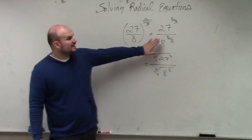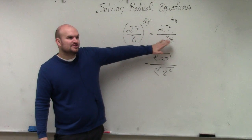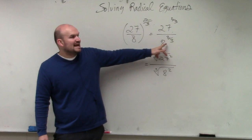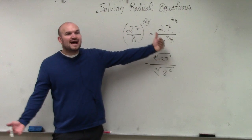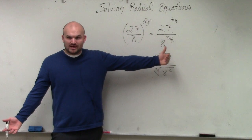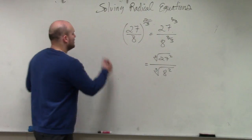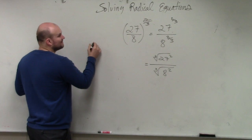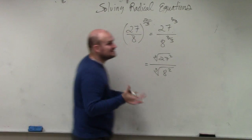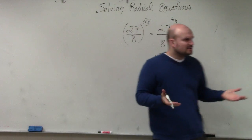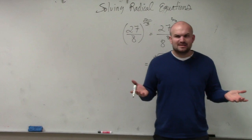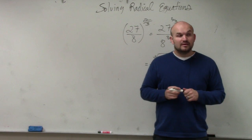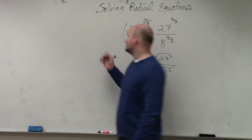But what was another way I showed you how to do this? We could also rewrite 27 and 8 as exponents. So here's another way to do this problem. I could rewrite 27 — is 27 a square number? A number multiplied by itself gives you 27? No, it's 3 cubed.